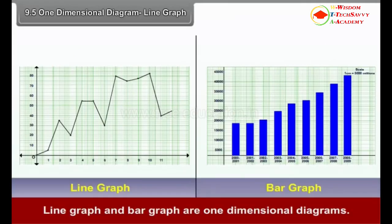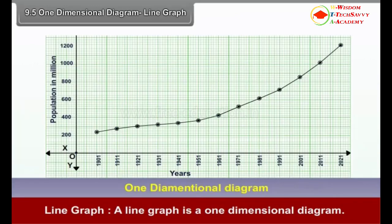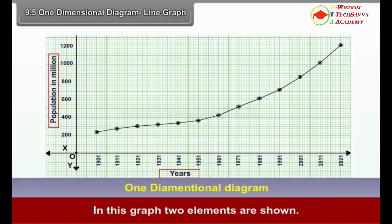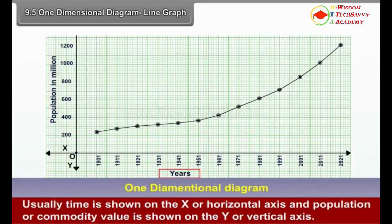9.5 One-Dimensional Diagrams. Line graph and bar graph are one-dimensional diagrams. A line graph is a one-dimensional diagram in which two elements are shown. Usually, time is shown on the x-axis (horizontal axis) and population or commodity value is shown on the y-axis (vertical axis).